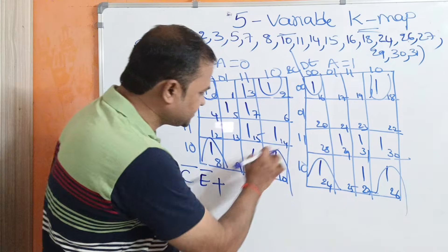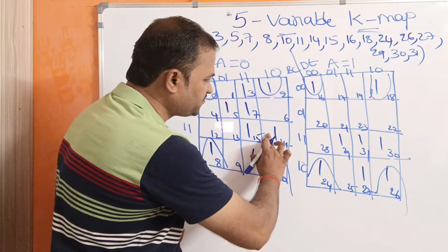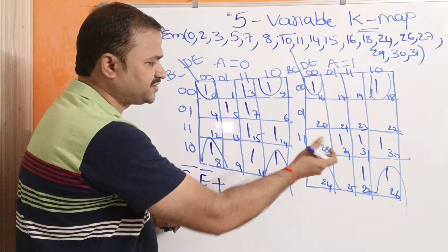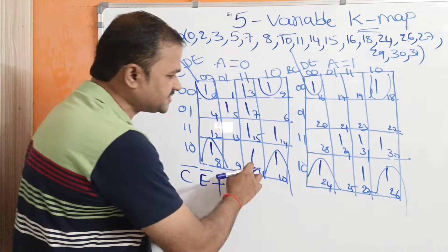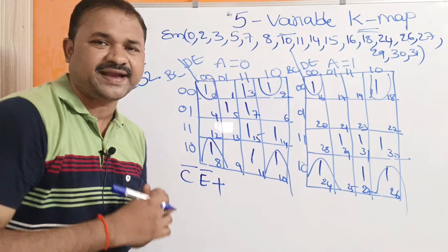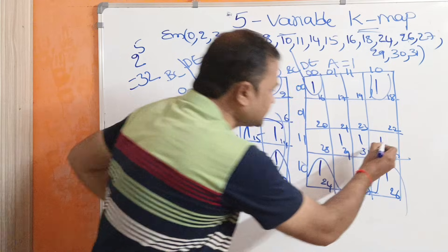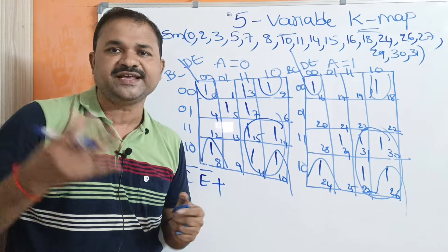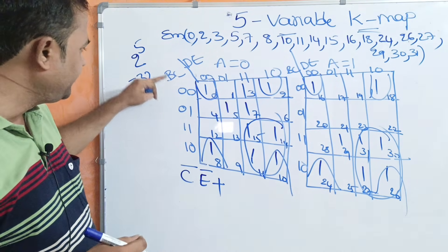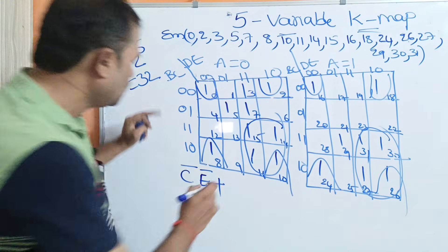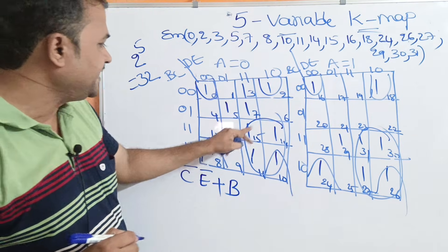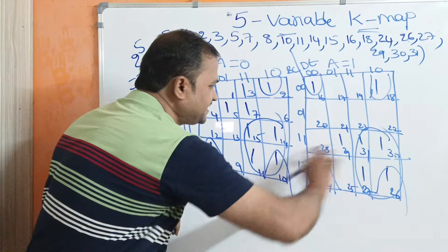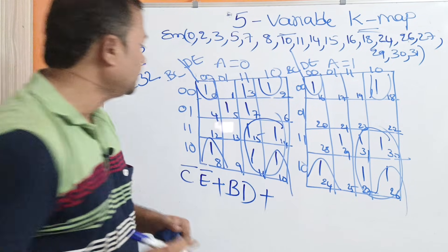Here we have four cells in one group and four cells in the adjacent group. These four cells and these four cells are adjacent: minterms 15 and 31, 14 and 30, 11 and 27, 10 and 26 are all adjacent. So we can make these eight cells as one group. Here A is changing from 0 to 1, so no need to consider A. The first one is common — that is B — and also D is common. So this group of eight cells represents the minterm BD.